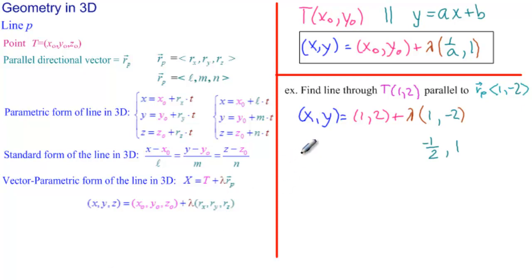And then we would fill in the rest, so it would be x, y equals 1, 2, plus lambda times this. These are the same.